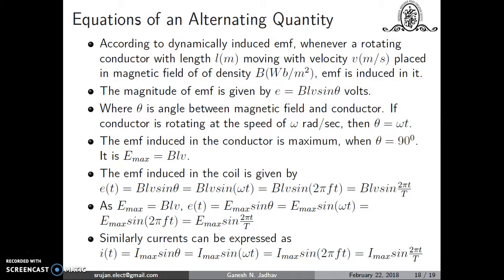From the dynamically induced EMF equation e = Blv sinθ, with θ = ωt and e_max = Blv, we can write the instantaneous EMF as: e(t) = e_max sinθ = e_max sin(ωt) = e_max sin(2πft) = e_max sin(2πt/T). Similarly, the instantaneous current is: i(t) = I_max sinθ = I_max sin(ωt) = I_max sin(2πft) = I_max sin(2πt/T). Thank you.